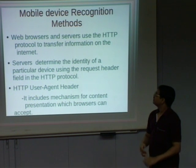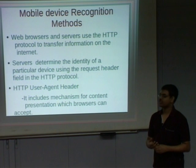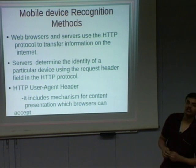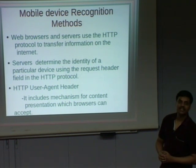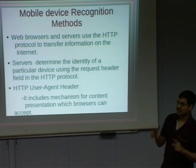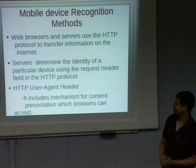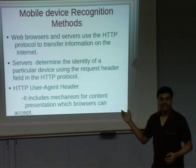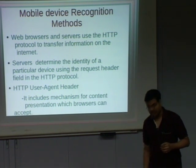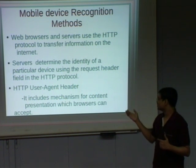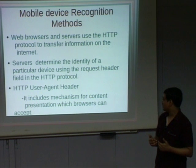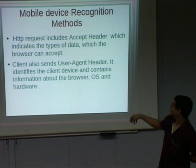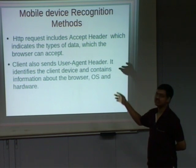How to recognize which device is accessing? Web browsers and servers use the HTTP protocol to transfer information on the internet. Servers can identify a particular device using a request header field in the HTTP protocol header. Using that header, they can understand through what device the user is accessing. This is also called the HTTP user agent header. The client sends this header, indicating what type of formats it accepts, the browser it supports, and screen resolution details. This user agent header contains information about the browser type, the OS, and the hardware — just these three things.